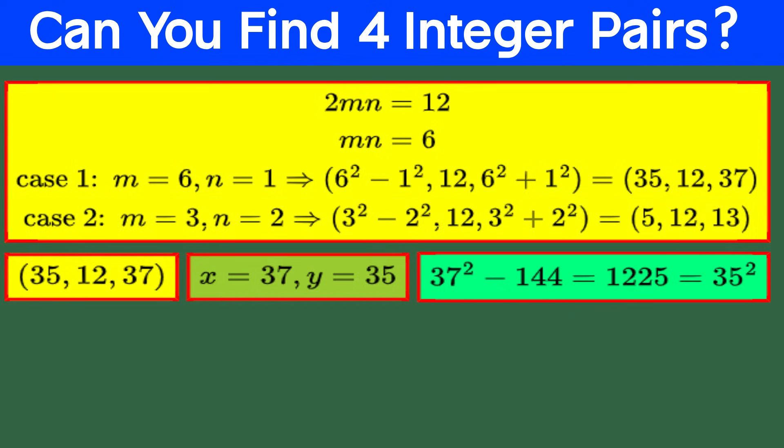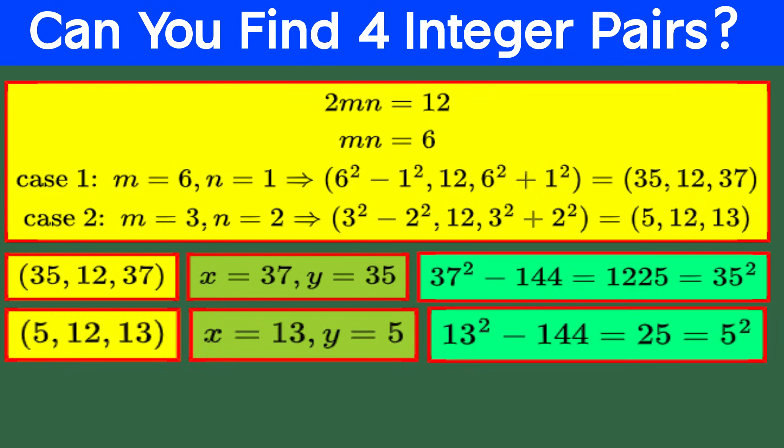Now, the second option is 2 times 3, and this gives us the Pythagorean triple, 3 squared minus 2 squared equal 5, 12, 3 squared plus 2 squared equal 13. So, we get x equals 13 and y equals 5. Let's test it, 13 squared minus 144 equals 25, which equals 5 squared. Boom. It works. Two more Pythagorean triples, both proving that math isn't just about numbers, it's about finding patterns, making connections, and having a little fun along the way.